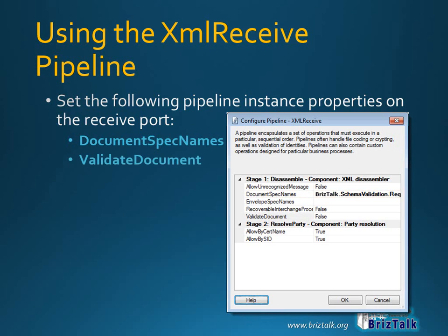The only other property you must set is to change the validate document flag from its default setting of false to true. Note that if you set this flag without setting the document spec names property, then you will get a runtime error stating that validation can only be performed when document schemas are provided.